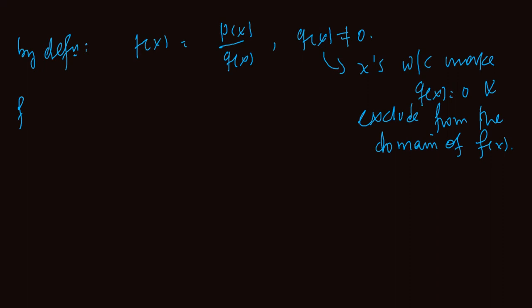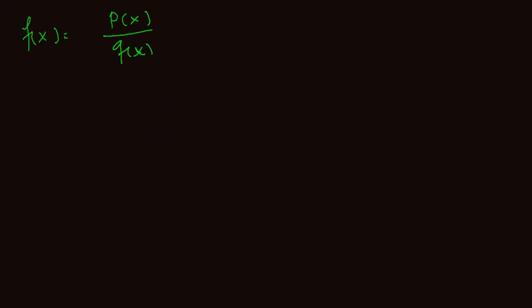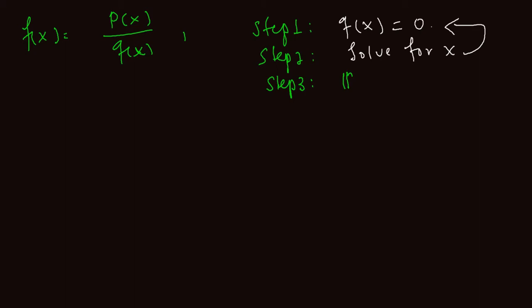That means if our function f of x is equal to the simplest function 1 over x, then x should not be 0. This means we can use all real numbers except the number 0 — this will be the domain of f of x. In general, to find the domain: first, set q of x equal to 0. Second step, solve for x from this equation. Third step, the domain will be all real numbers except the number which is the solution of that equation.